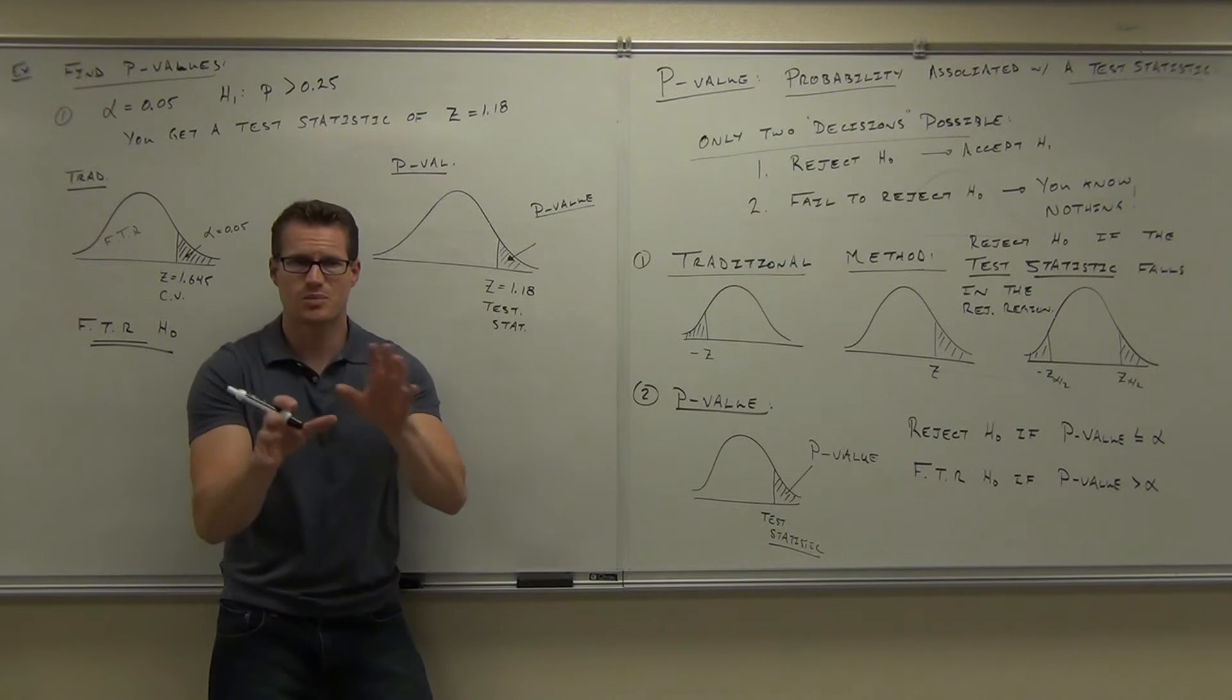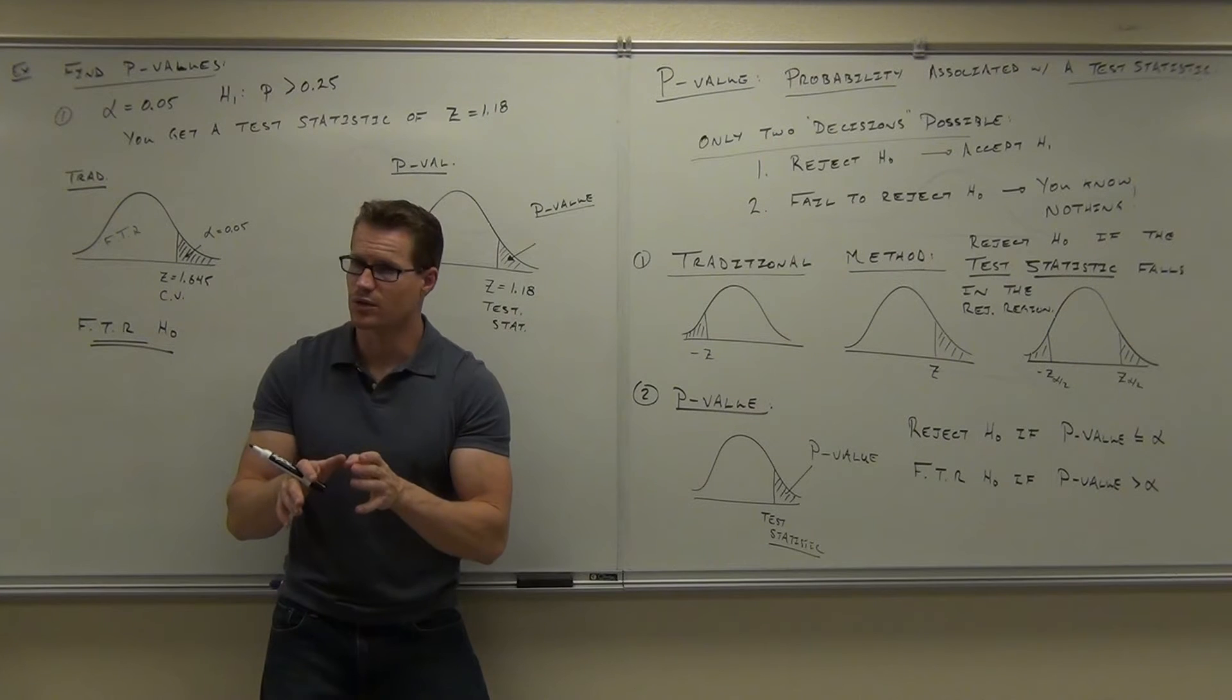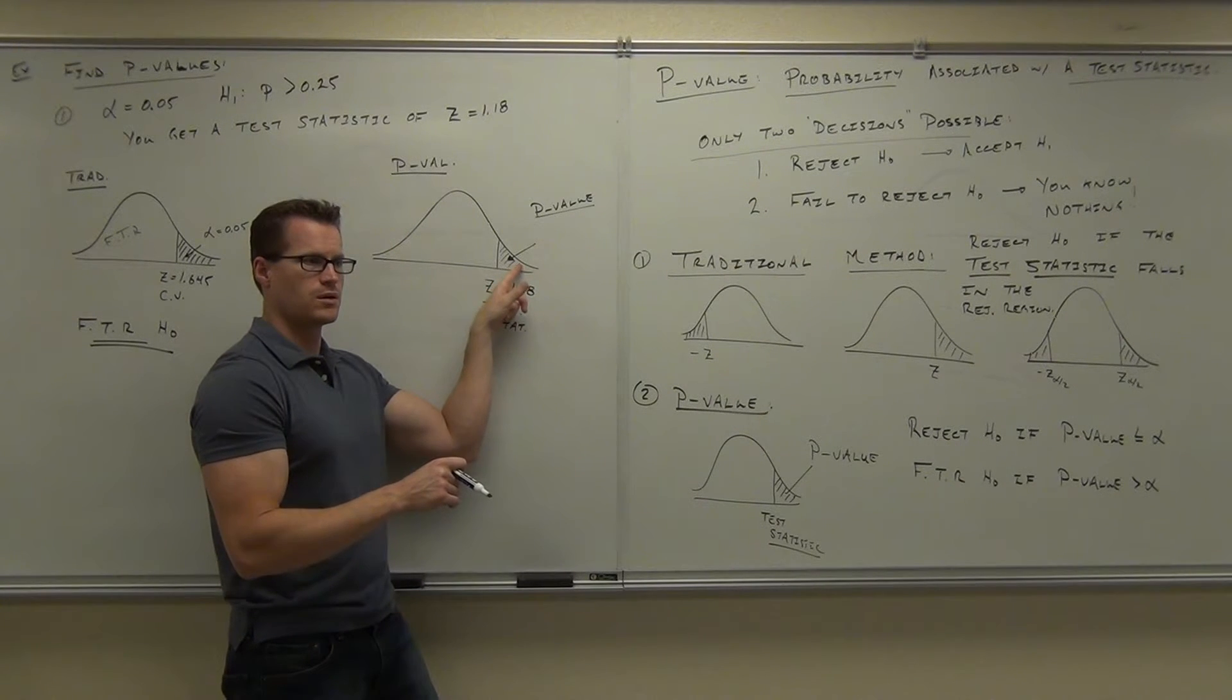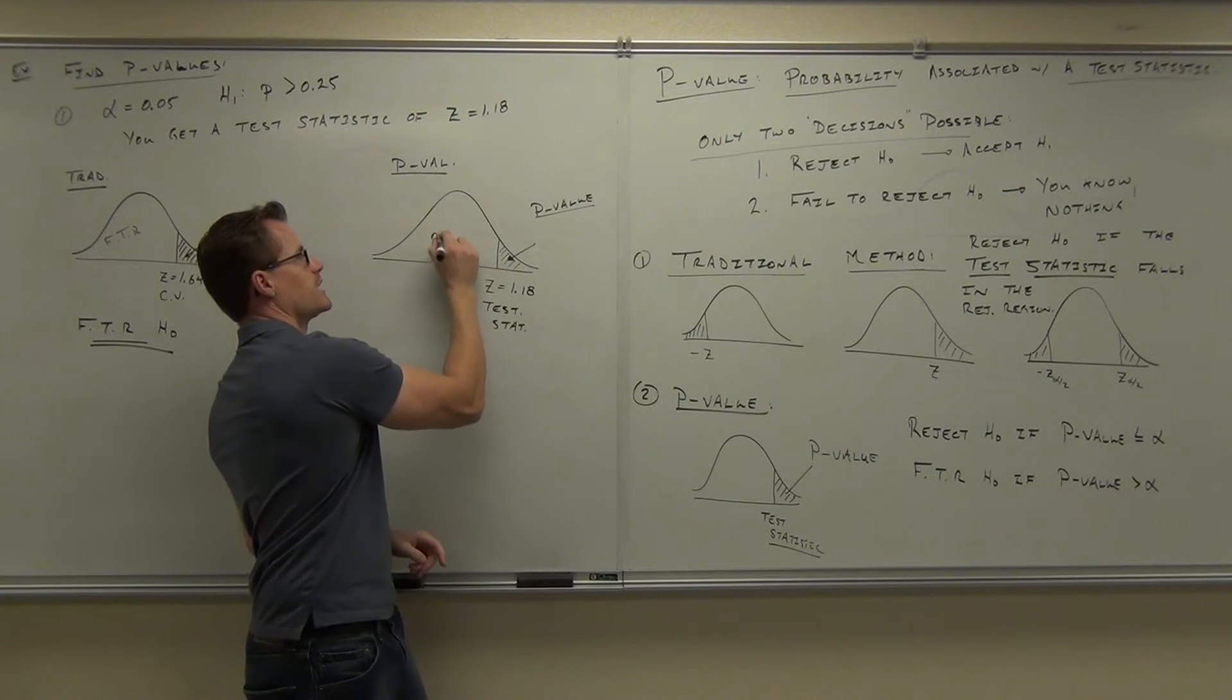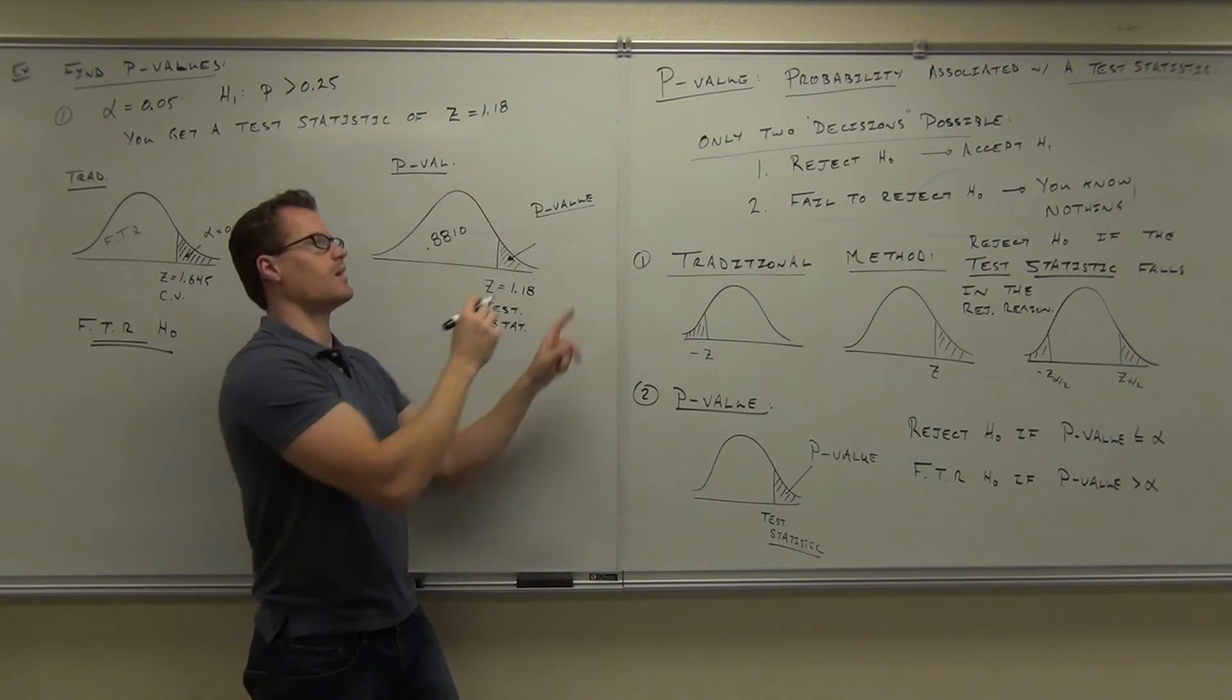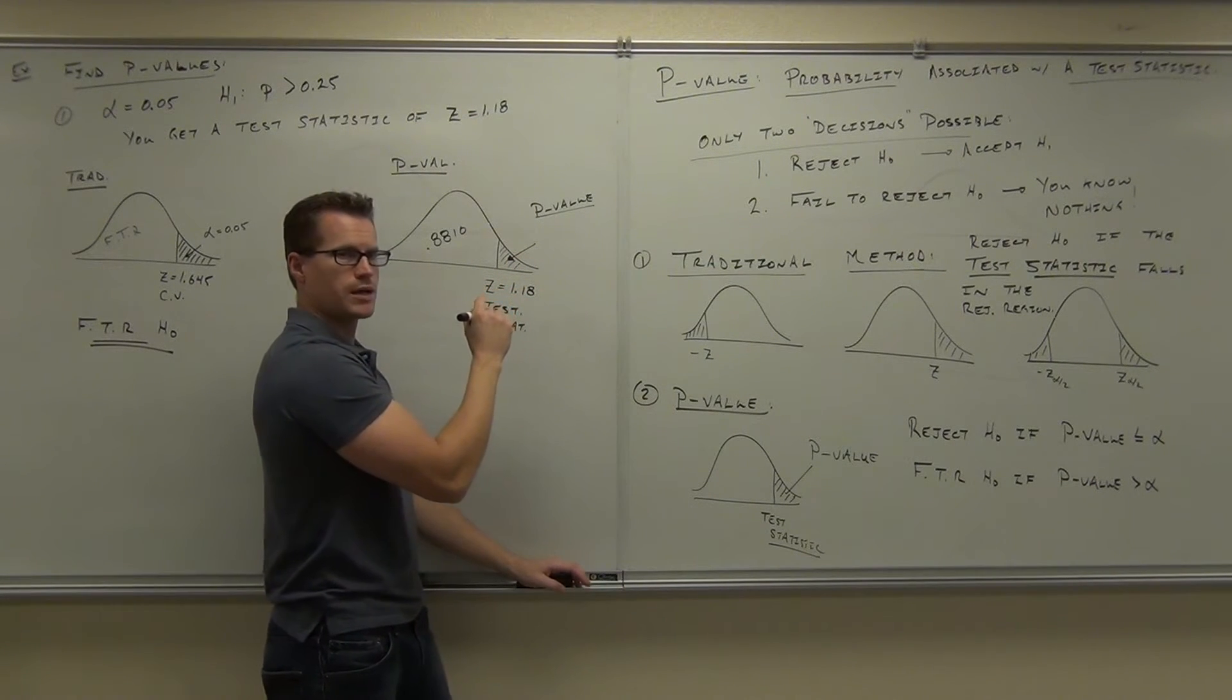Now, here's the big thing where some of you guys have not really conquered this yet, even up to this date. If you do .8810, look at the board. Is this .8810? You've got to be smarter than your table. What's your table give you? Did it give you the right or the left? It gave you this. This is .8810. Well, how do you find that one? The p-value, therefore, is .1190.